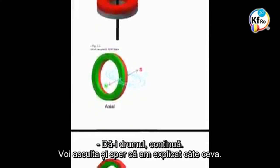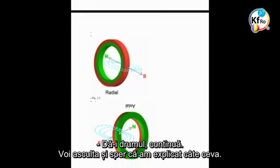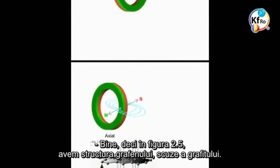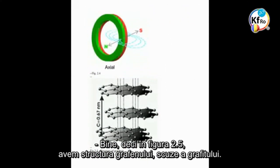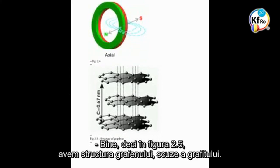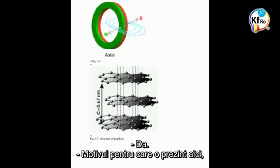I'll continue. In Figure 2.5, we have the structure of graphite. The reason I'm bringing it here is because I don't know what the structure of the copper nano layers will be.